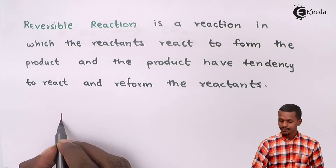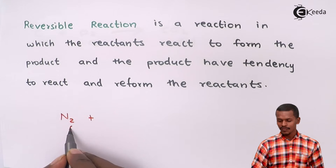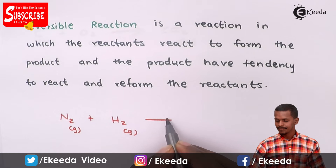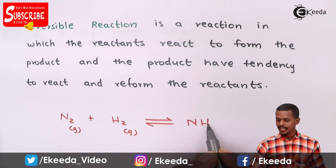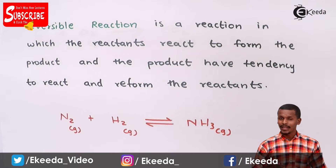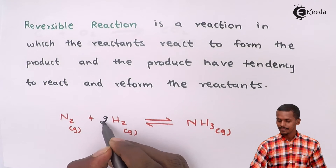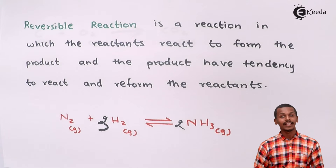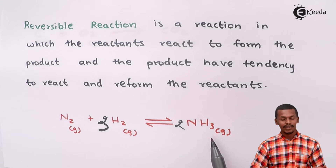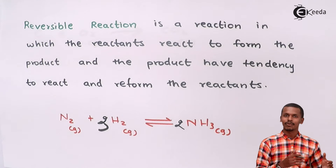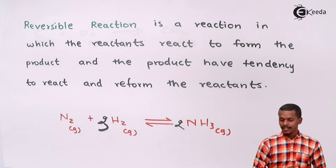For example, if nitrogen in the gaseous phase reacts with hydrogen, also in the gaseous phase, it forms NH₃, which is also in the gaseous phase. To balance the stoichiometry, we multiply hydrogen by 3, so that the total number of hydrogen atoms on both sides is equal — that is 6 atoms of hydrogen in both the reactants and the product. This kind of reaction is known as a reversible reaction.